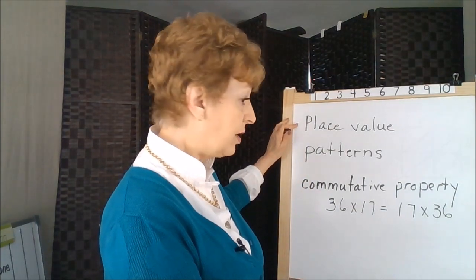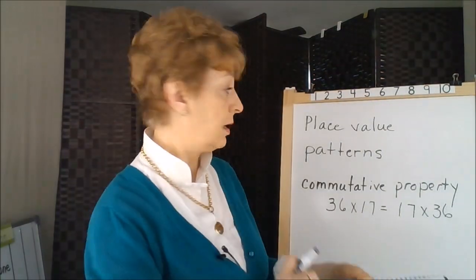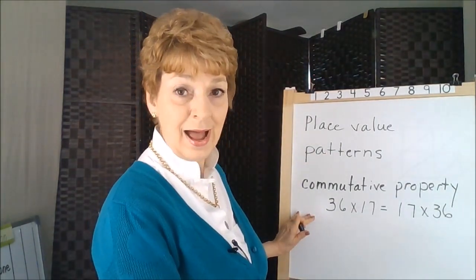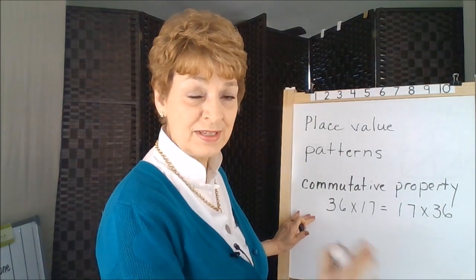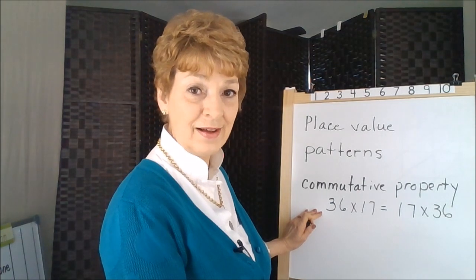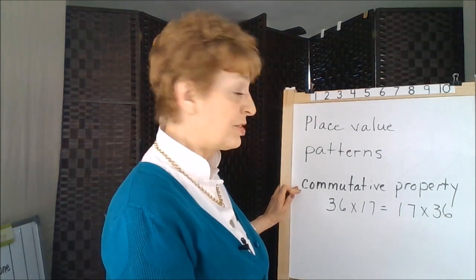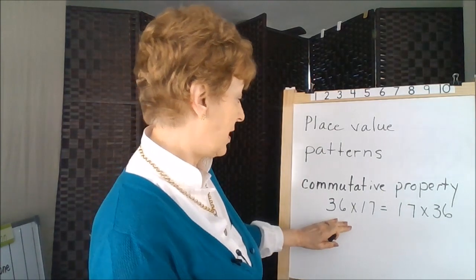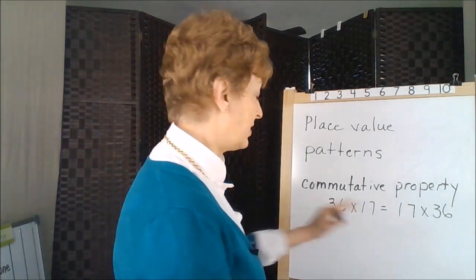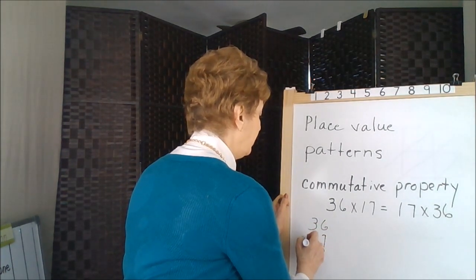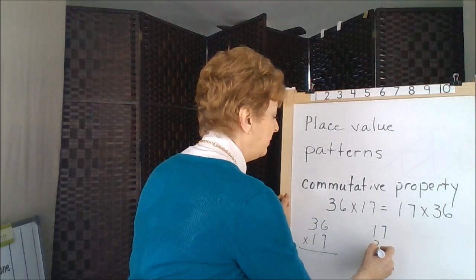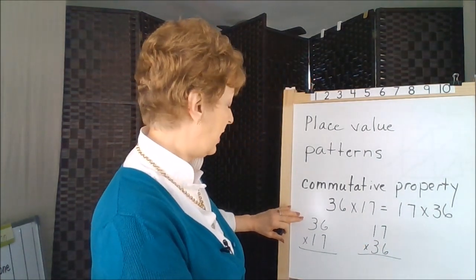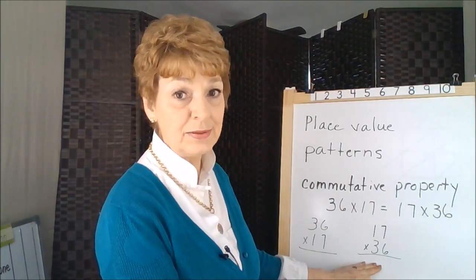So place value — keeping the columns straight — patterns, understanding how numbers actually work and some of the tricks with different numbers, and the commutative property all work together. It doesn't matter which way you write your problem: sideways with the 36 first or the 17 first, or lined up vertically in the more traditional way. It wouldn't matter if the 36 was on the top or the bottom — it would still give you the same answer.